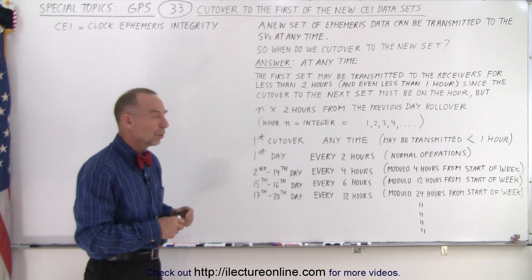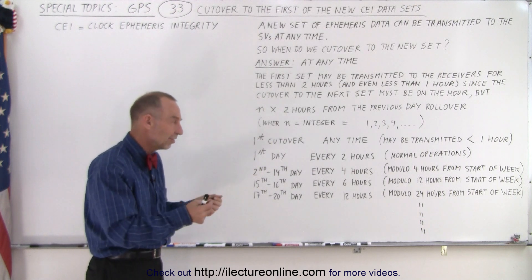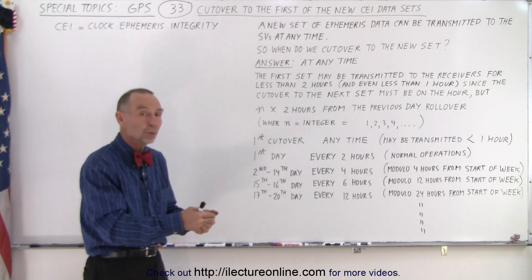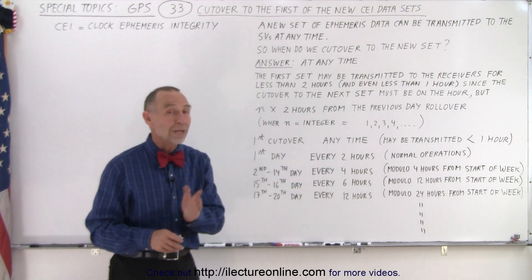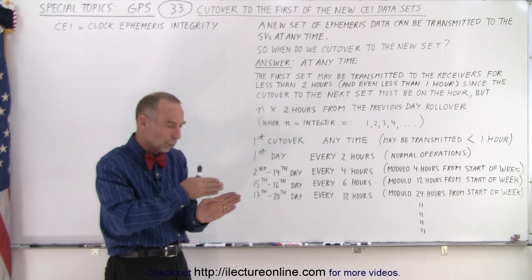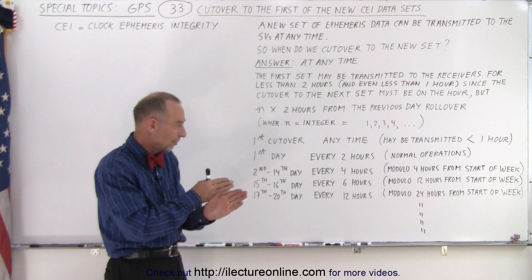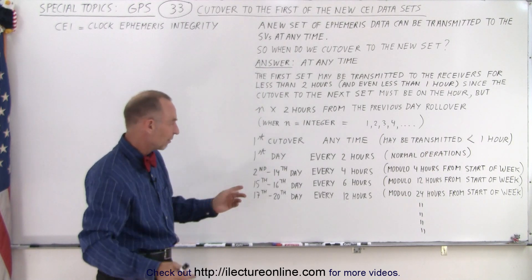From the second to the 14th day, we now send ephemeris data sets every four hours. That's pre-calculated and done modulo four hours from the start of the week, so we're tuned into the end-of-week rollover. Every four hours after that for the next 13 days, you then cut over to the new data set.